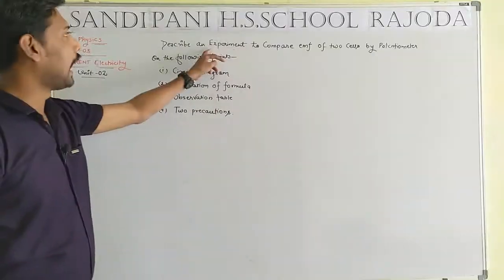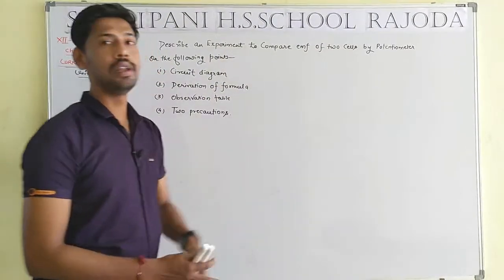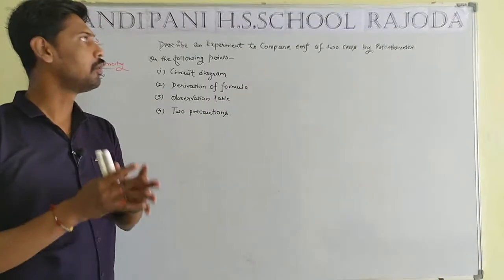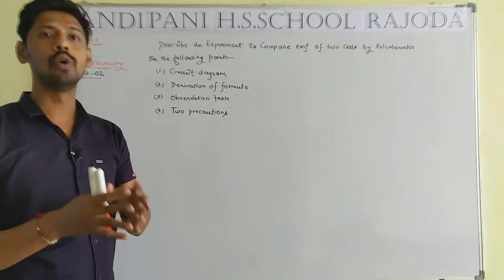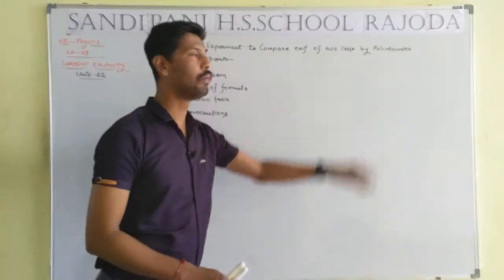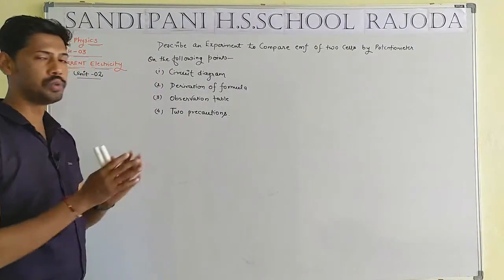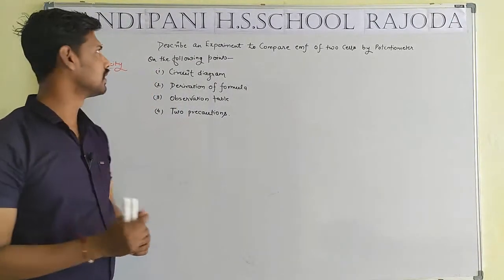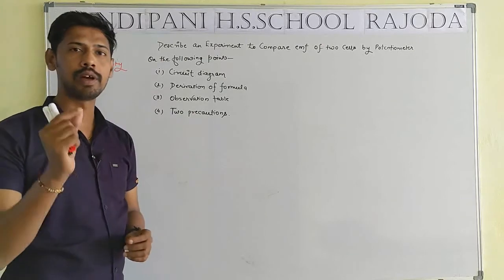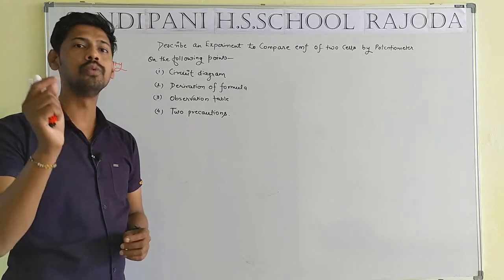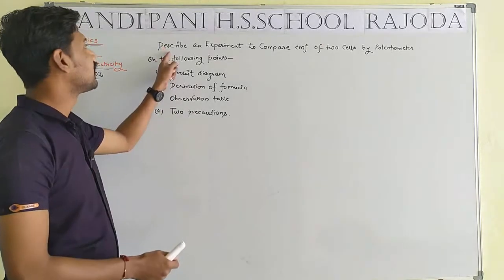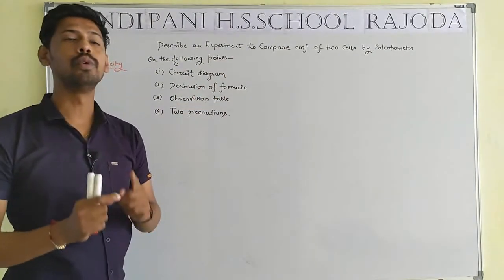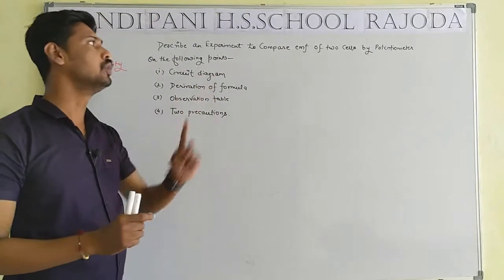Today I am taking once more chapter number 3, current electricity, unit number 2, class 12 physics. Today's topic: the experiment to compare the electromotive force (EMF) of two cells by use of a potentiometer. According to the board exam, this question can be asked for 4 to 5 marks: describe an experiment to compare the electromotive force of two cells.